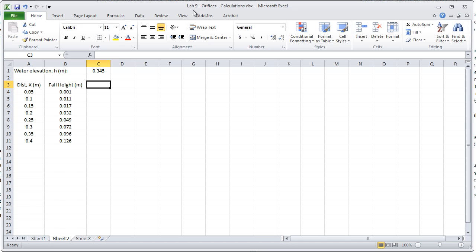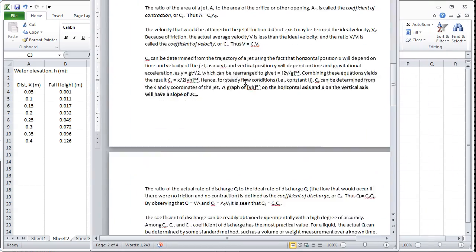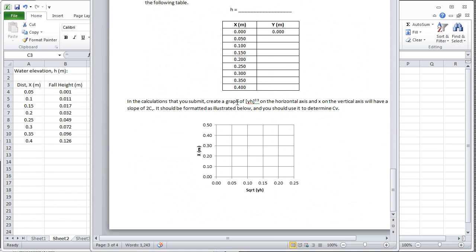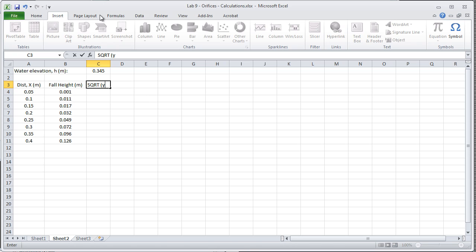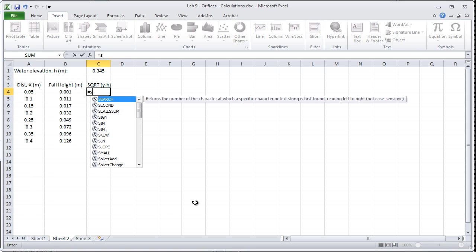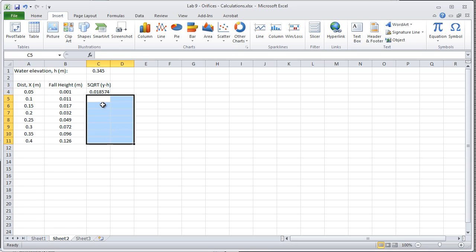In the lab assignment, it explains that you need to calculate C sub V by graphing the square root of Y times H. And so square root of Y times H is what I'll calculate. And this fall height is what I mean by Y.